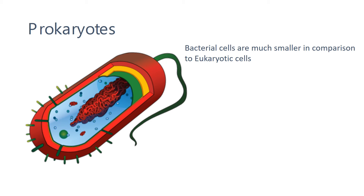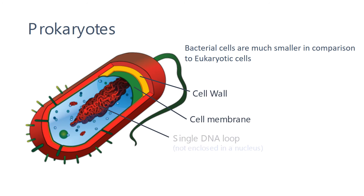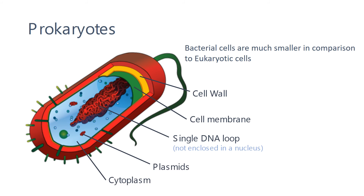You need to know the different features associated with the prokaryotes, which include the presence of a cell wall, a cell membrane, the single DNA loop which is not enclosed in a nucleus, plasmids, and the cytoplasm.